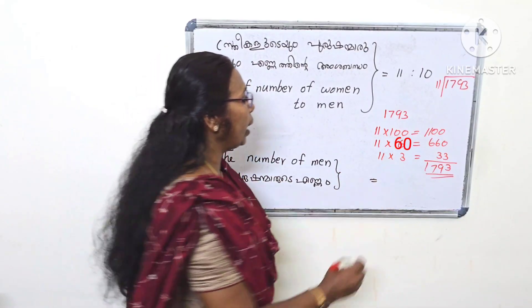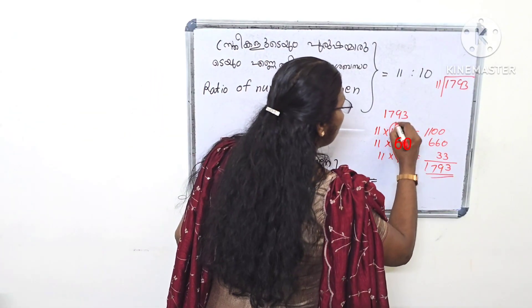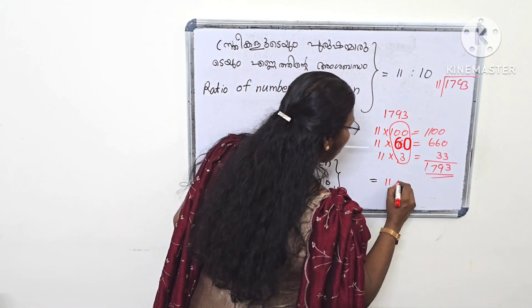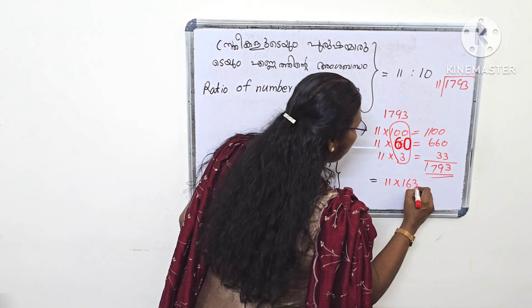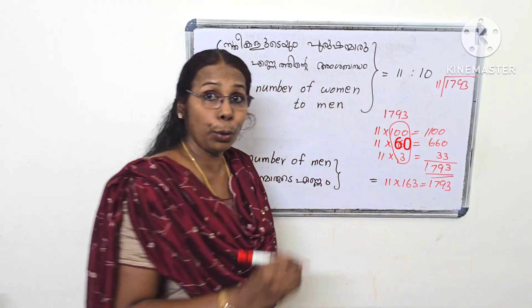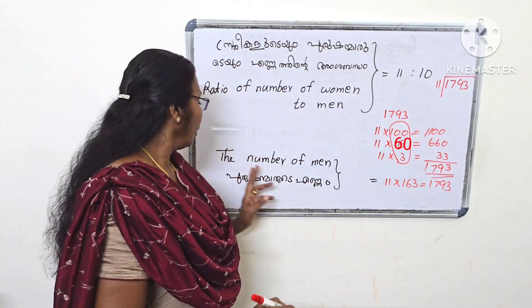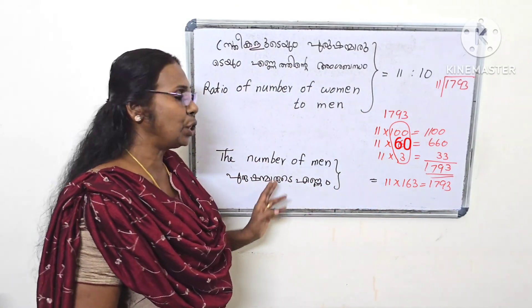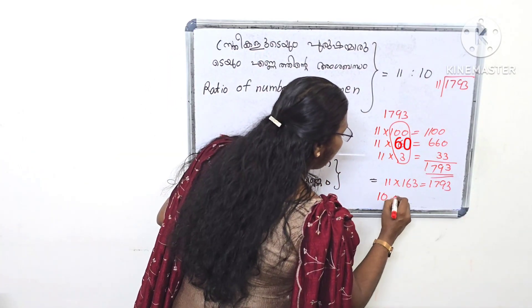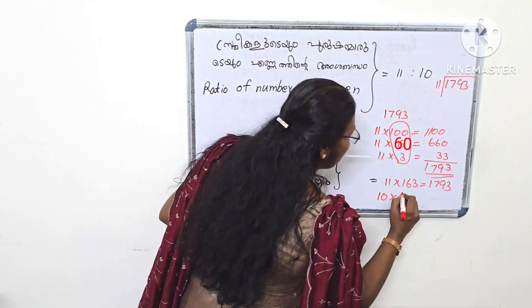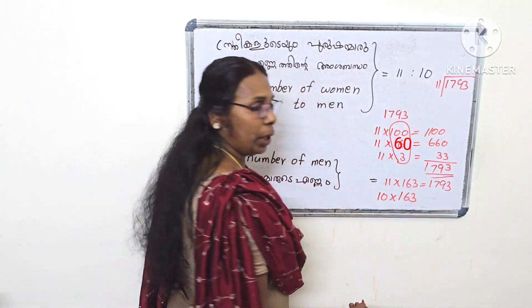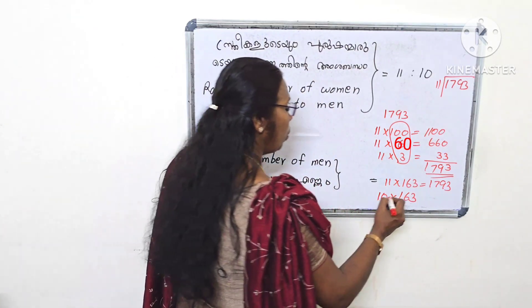How many men are listed? 1 through 160. 1 through 163. 1 through 173. That's the number of men. If I took 10 times 163, that gives the result.